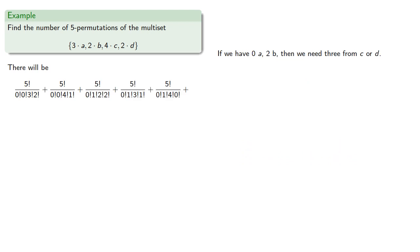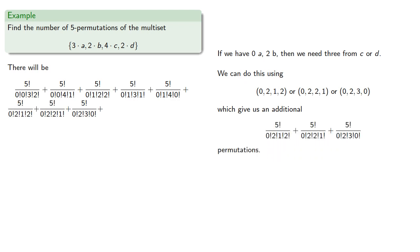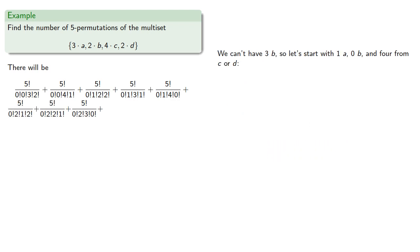If we increase the number of b's, so we now have 0 a's and 2 b's, we need 3 from c or d. And we can do this with 1 c and 2 d's, which give us additional permutations. We can't have 3 b's, so let's start with 1 a, 0 b's, and 4 from c or d, which we can do as shown, giving us more permutations.